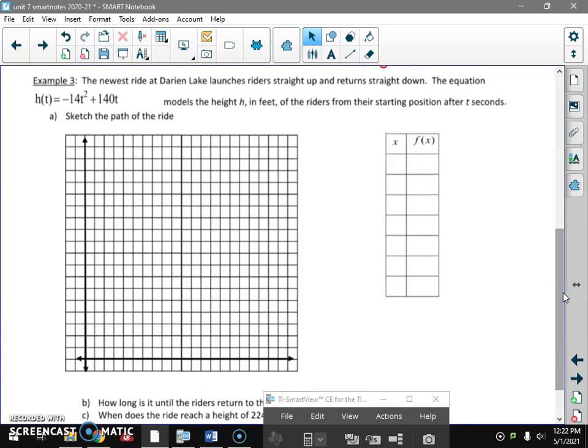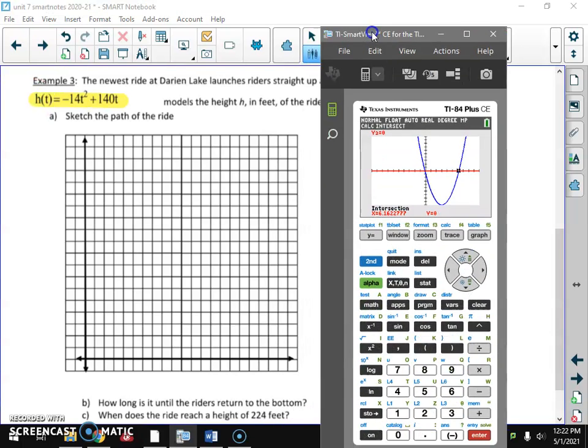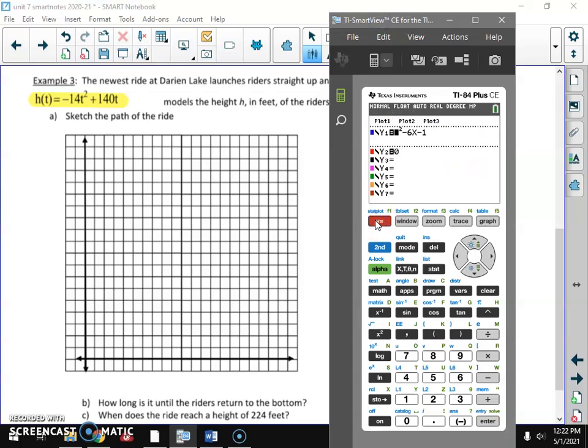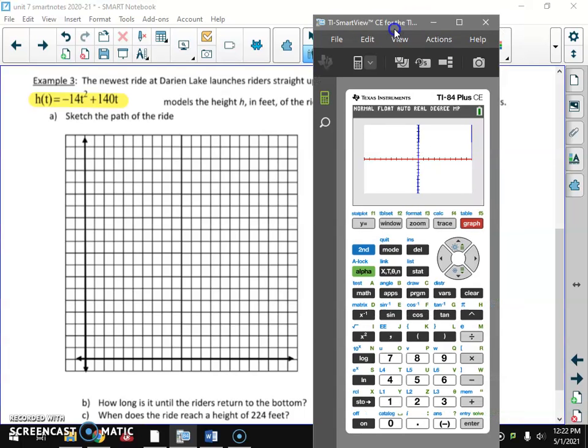Last question. Darien Lake's newest ride launches riders straight up and returns straight down, and it's modeled by the equation right here. So let's plug that baby in. This is going to be one we're going to have to set our window by hand. Negative 14x squared plus 140x. If I just hit graph, it's going to be way off the screen. We're going to go to our table.